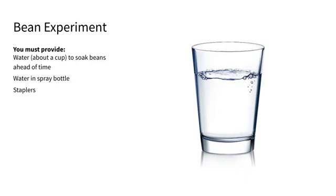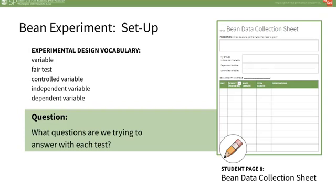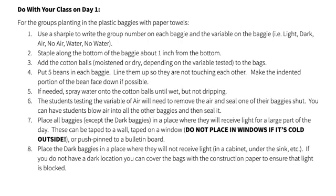Directions are detailed on Teacher Page 6. As an optional enrichment activity, you can provide students with a digital camera to set up a time-lapse of the bean growth. See the Lesson 3 Extend activity for more details. To start the bean experiment setup, place students into 9 groups. Set up the bean experiment using the directions on Teacher Pages 6 and 7, as well as Student Page 8. Three variables will be tested—light, air, and water. Each of the three variables will be tested by three student groups to get the best data. Tell students to be careful with the soaked beans so that they do not damage them.